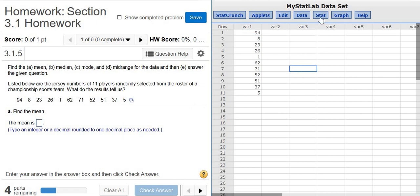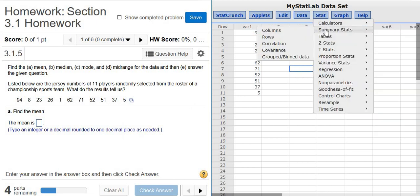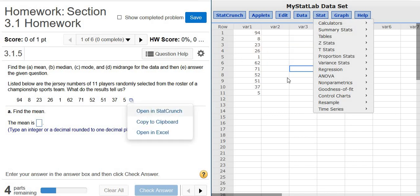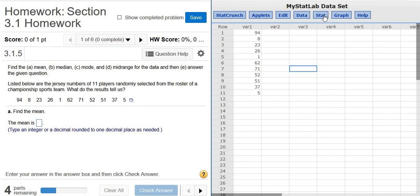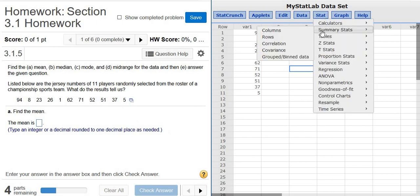The command in StatCrunch is Stat, Summary Stats, Columns. That's how you can get pretty much all of the answers, not all of them, but most of them in this case. Again, you click the little box, you click Open in StatCrunch, and then you get this screen here. Then you go to Stat, Summary Stats, Columns.